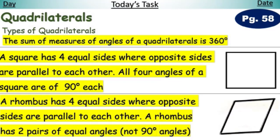Dear students, open resource pack page number 58 — Types of Quadrilaterals. The sum of measures of angles of a quadrilateral is 360 degrees. A square has four equal sides where opposite sides are parallel to each other. All four angles of a square are of 90 degrees.